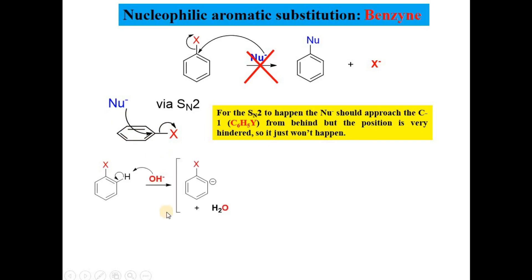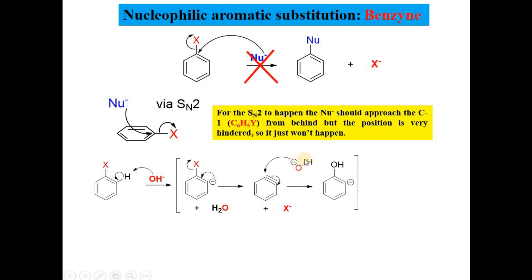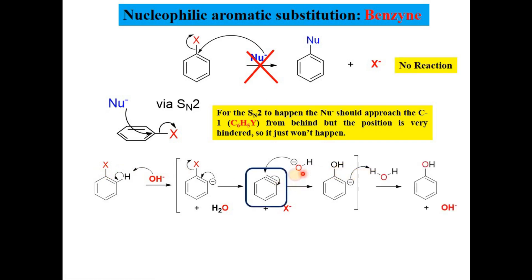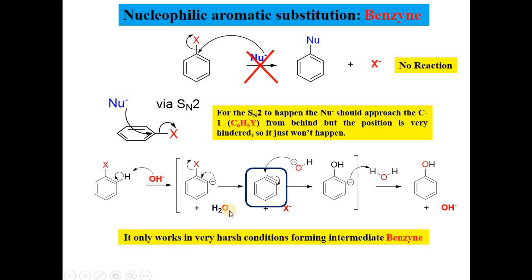In the benzyne mechanism, the leaving group X is not directly substituted. First, a base removes the hydrogen atom (proton) from the benzene ring, creating a negative charge. This negative charge is stabilized by converting into benzyne as the leaving group X departs, forming the benzyne intermediate. Benzyne is very reactive and reacts with the nucleophile, which takes the position of X to produce the substituted product. This reaction requires very harsh conditions — around 300°C and 300 atm — making it difficult to carry out.